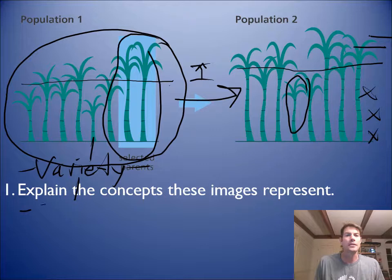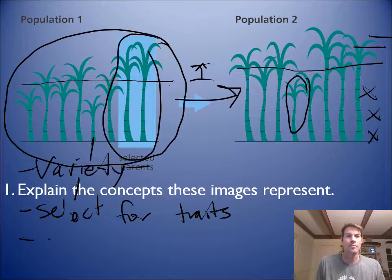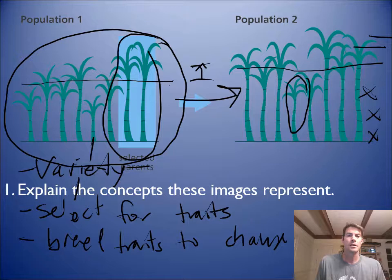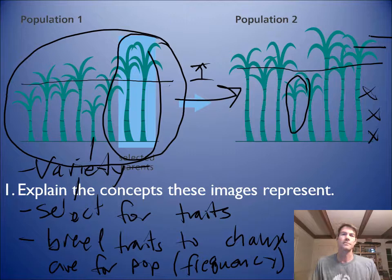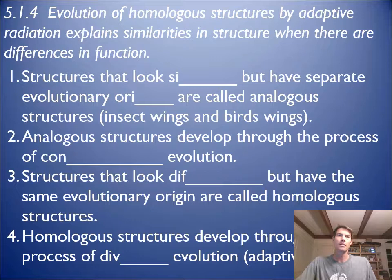These images represent how you can select for traits and then do artificial breeding with those traits — breed traits to change the population average. The word I'm looking for is frequency. So the frequency of those different traits — either being tall or shorter or whatever — that's what changes.